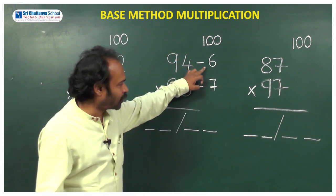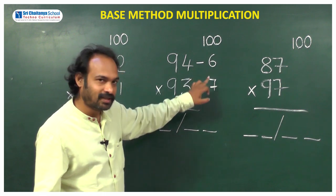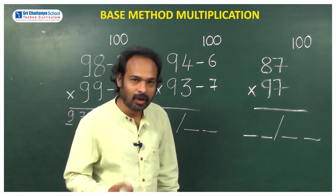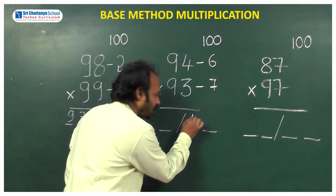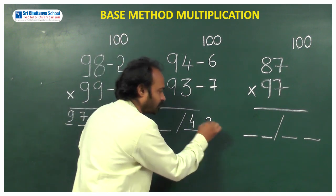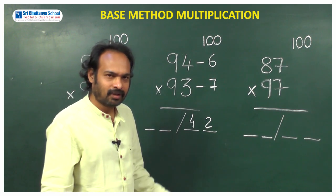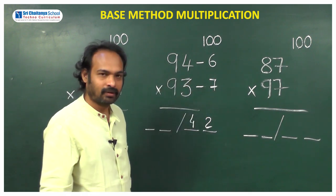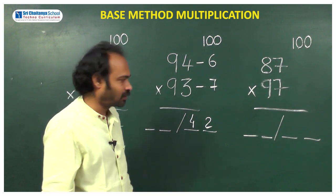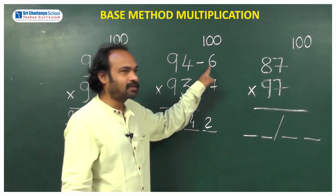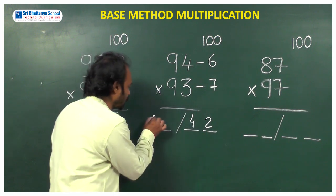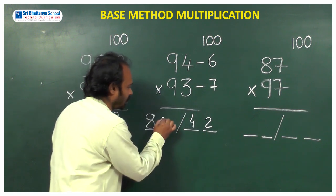Now look at here. What we need to do is first take the product of these two numbers: 6 into 7, which is 42. So write 42 here. What is the next step? Simply diagonal subtraction: 94 minus 7, how much? 87, or 93 minus 6 equals 87. So the answer is 8742.